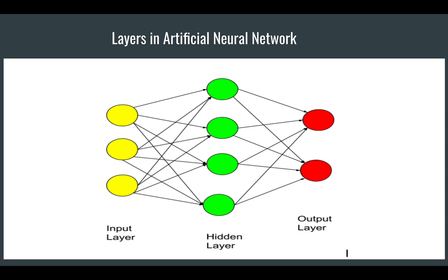The input layer depends on how many neurons you want to put in it. If you have a dataset with 15 or 16 features, then 16 neurons will be in the input layer. When dealing with images, if the image dimension is 50x50 and it is a color image, it has three channels. A black and white image has only one channel. So for a 50x50x3 image, you multiply: 50x50 = 2500, times 3 = 7500 neurons in the input layer.